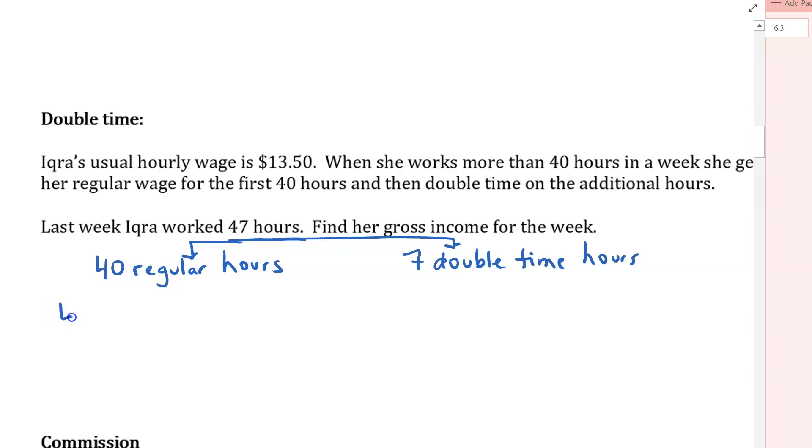So under the 40 regular hours, it's fairly straightforward. We're going to say for those first 40, she's going to get paid that regular $13.50 for every hour. So if I multiply 40 times 13.50, I'm going to get $540.